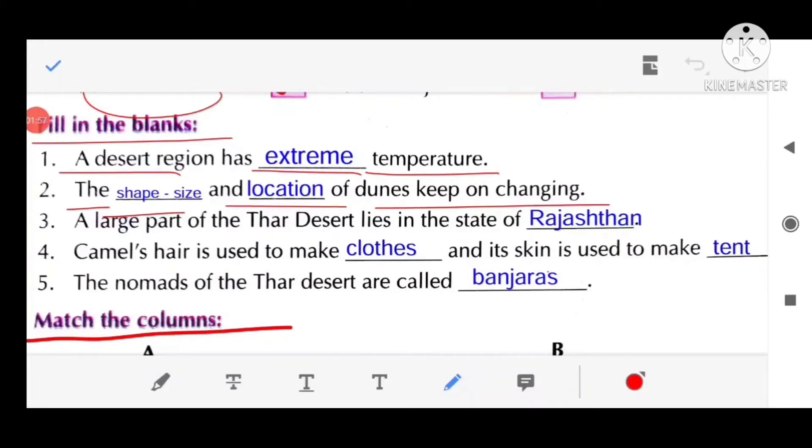A large part of the Thar desert lies in the state of Rajasthan. The camel's hair is used to make clothes and its skin is used to make tent.